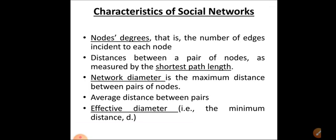What are the characteristics of a social network? The first characteristic involves node details, node edges, and finding the distance between a pair of nodes at the shortest path.